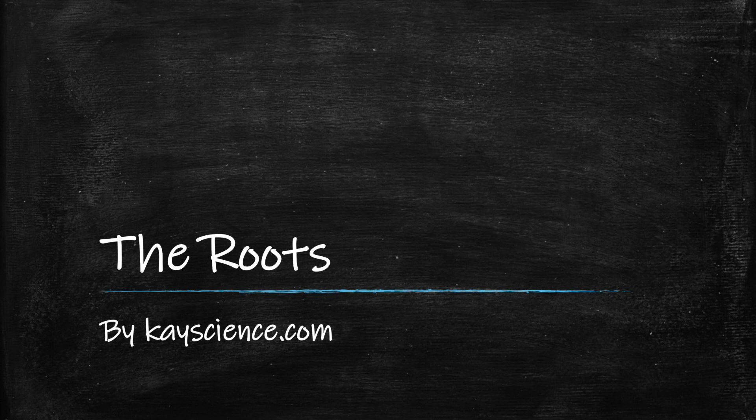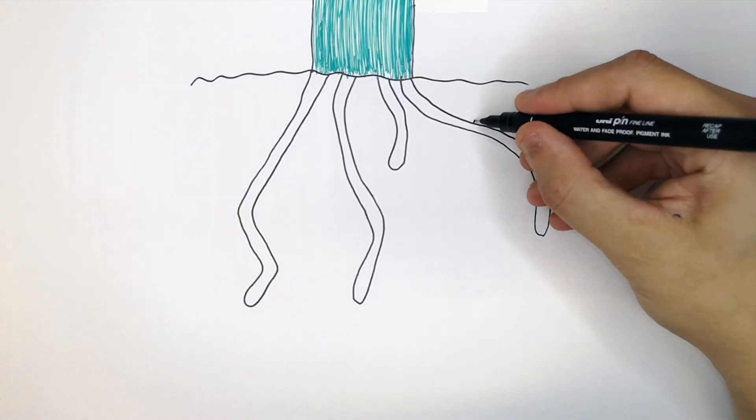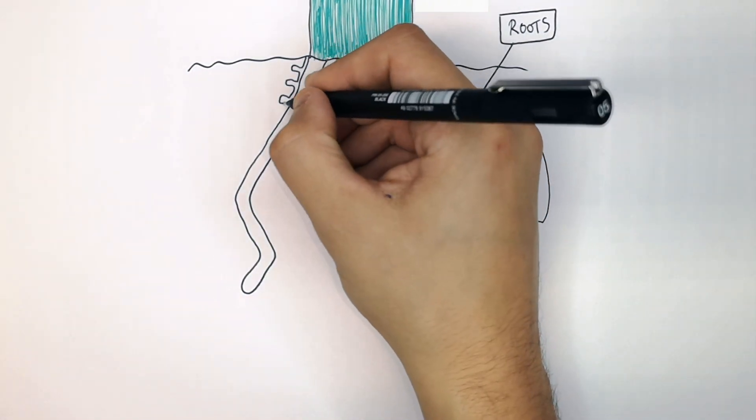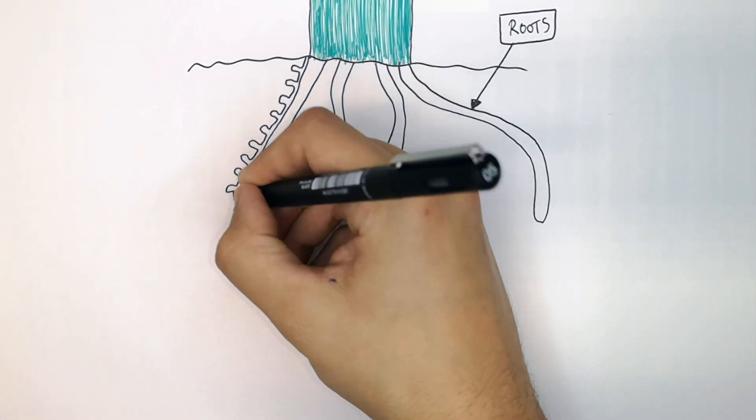The adaptations of the roots by kscience.com. The roots of plants are highly adapted. On the surface of the roots you've got cells called root hair cells.